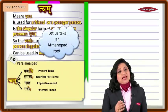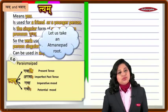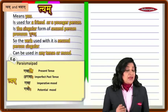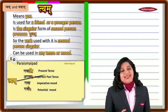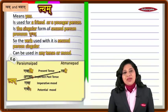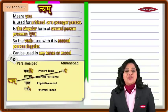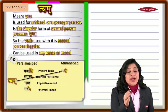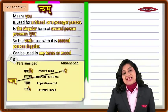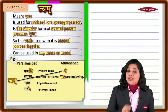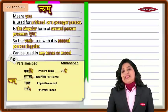For the ātmanepada, we take the root ram — meaning 'to enjoy.' In present tense: 'twam ramasva,' meaning 'you are enjoying.'